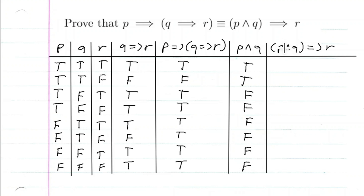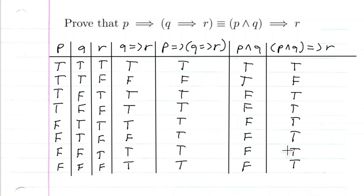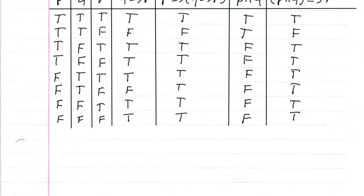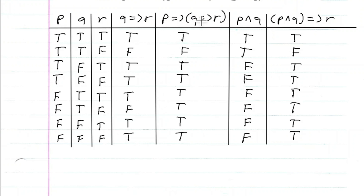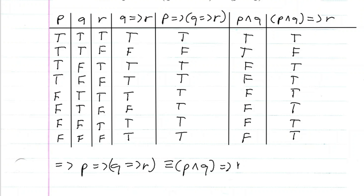Now we compute P and Q implies R, looking at the R column as our conclusion. True implies true is true. True implies false is false. And since P and Q is our assumption and it is false the rest of the way, we know the rest of these are true. Notice that the column for P implies Q implies R is the same as the column for P and Q implies R. This proves that P implies Q implies R is logically equivalent to P and Q implies R. And that is the proof.